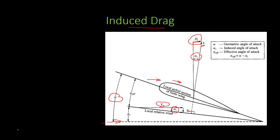Coming to the calculations of induced drag, from the diagram we can see that the induced drag D_i is equal to L·sin(alpha_i). Since alpha_i is generally a very small value, taking it in radians we can say that D_i is equal to L·alpha_i.